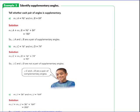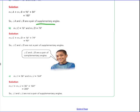Tell whether each pair of angles is supplementary. If A is 96 and B is 84 — 96 plus 84 equals 180, so yes, they are supplementary. If angle C is 16 and D is 74 — 16 plus 74 equals 90, so they are not supplements; they are complements. If I is 36 degrees and J is 164 — 36 plus 164 equals 200, which is over 180, so they are not a pair of supplementary angles.